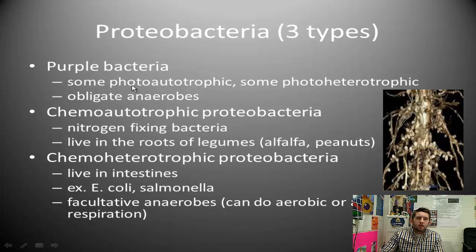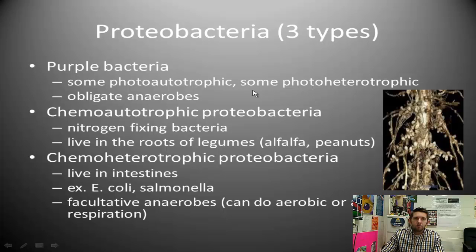Looking at the prefix photo, it has to do with light. Autotrophs are able to produce their own nutrients via light — kind of like photosynthetic organisms. Some purple bacteria are photosynthetic, some are photoheterotrophic, meaning they can obtain organic materials separately but also using light, so they're versatile. Obligate anaerobes, as we've discussed, are obligated to be in anaerobic conditions; they can't survive in aerobic conditions — oxygen is poisonous to them.